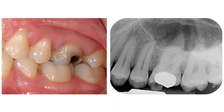The tooth gave slightly exaggerated responses to thermal and electric pulp tests and was not tender to vertical and lateral percussion. A radiograph showed reduction of the pulp chamber and absence of periapical disturbances.